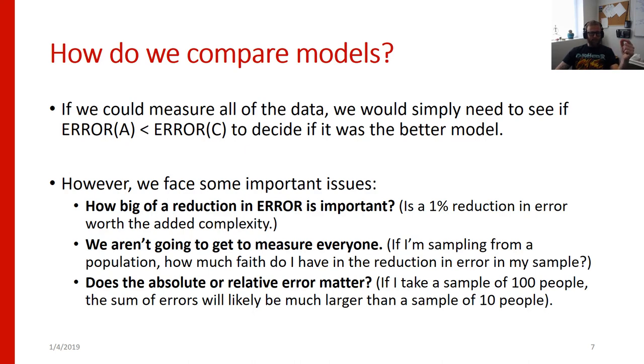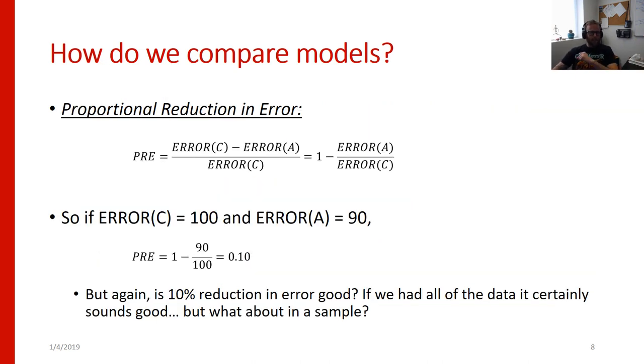But there are a couple of other questions that we need to consider when we're trying to decide what model is the best explanation of our data. First, we need to decide how big of a reduction in error is really important. For instance, if we reduce error by 1%, is that worth the added complexity of an additional variable? Maybe if one variable explains an additional 1%, that's not so bad. But if we have to add 10 more variables to explain 1%, it doesn't sound like those 10 variables are very good. And those are sort of intuitions right now. But over the scope of this course, we're going to actually talk about how to formalize those intuitions and make sense of them and apply mathematical rules for making these decisions.